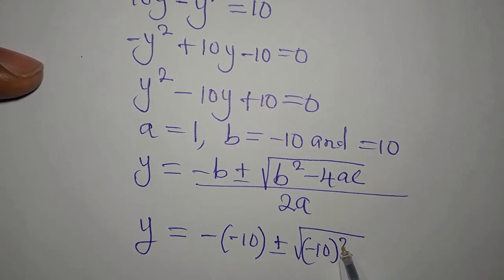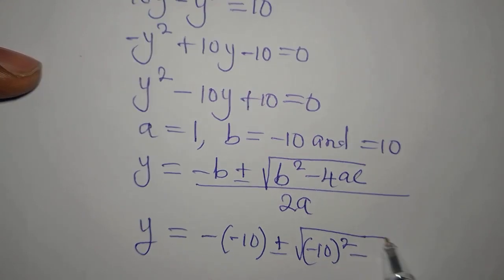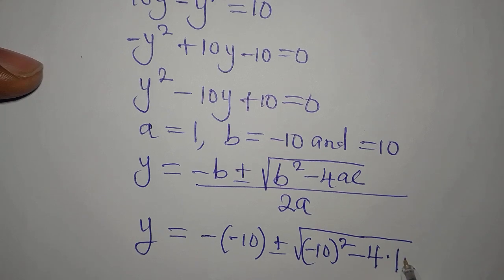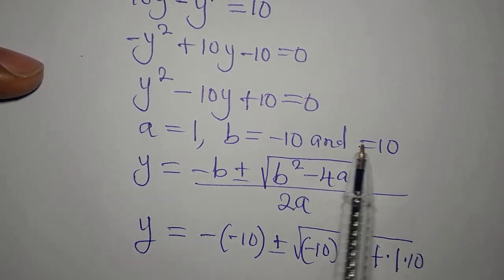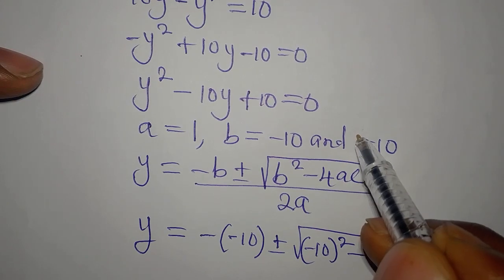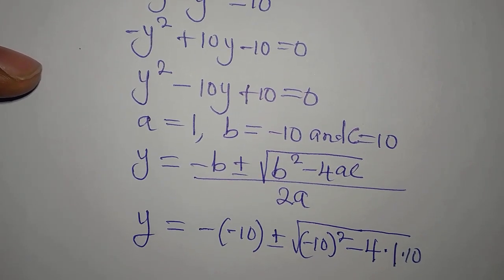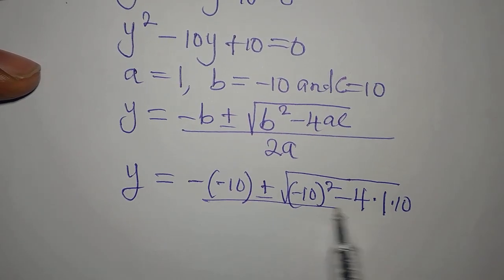Then plus or minus b squared, that will be minus 10 in brackets squared, then we have minus 4 times 1 times 10, because a is 1 and c is 10.